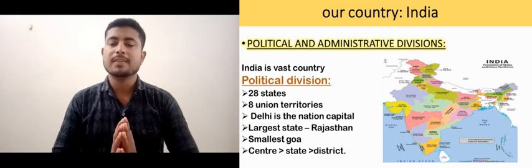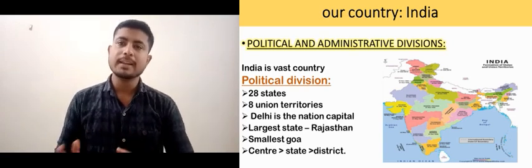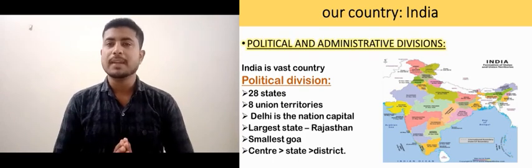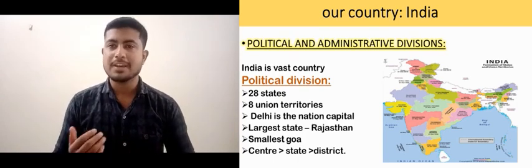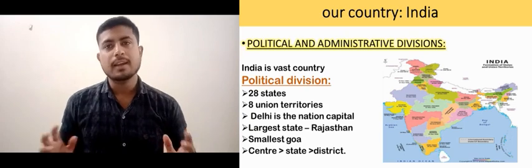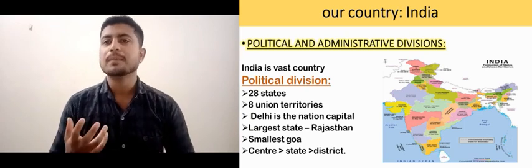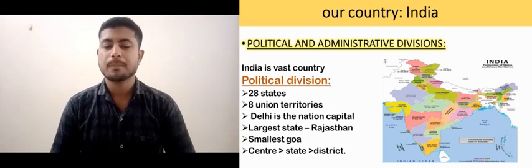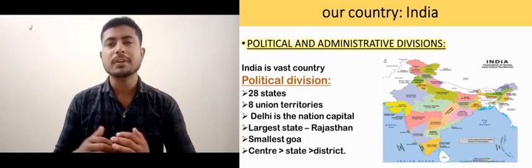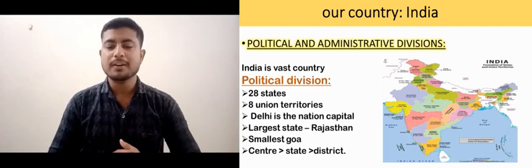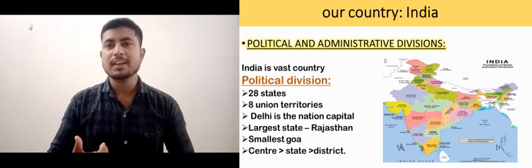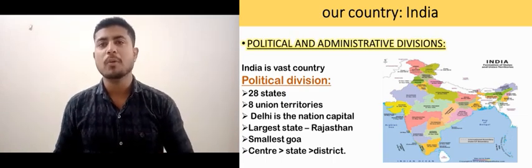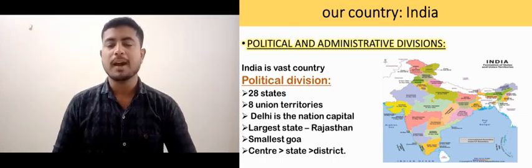India is a vast country and that's why it is divided politically into 28 states and 8 union territories. Delhi is our national capital. The largest state in India is Rajasthan and the smallest is Goa. For administrative reasons, it is divided into central, state, and district levels, where central is at the top and district is at the bottom.